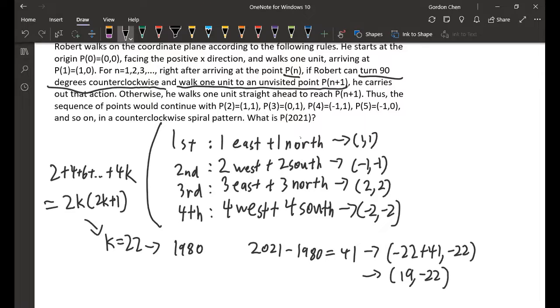At first he walks one east then one north and ends up at (1,1). Then he walks two west and two south and gets to (-1,-1). Then he walks three east and three north and gets to (2,2). Then he walks four west and four south and goes to (-2,-2). So we see a pattern here.